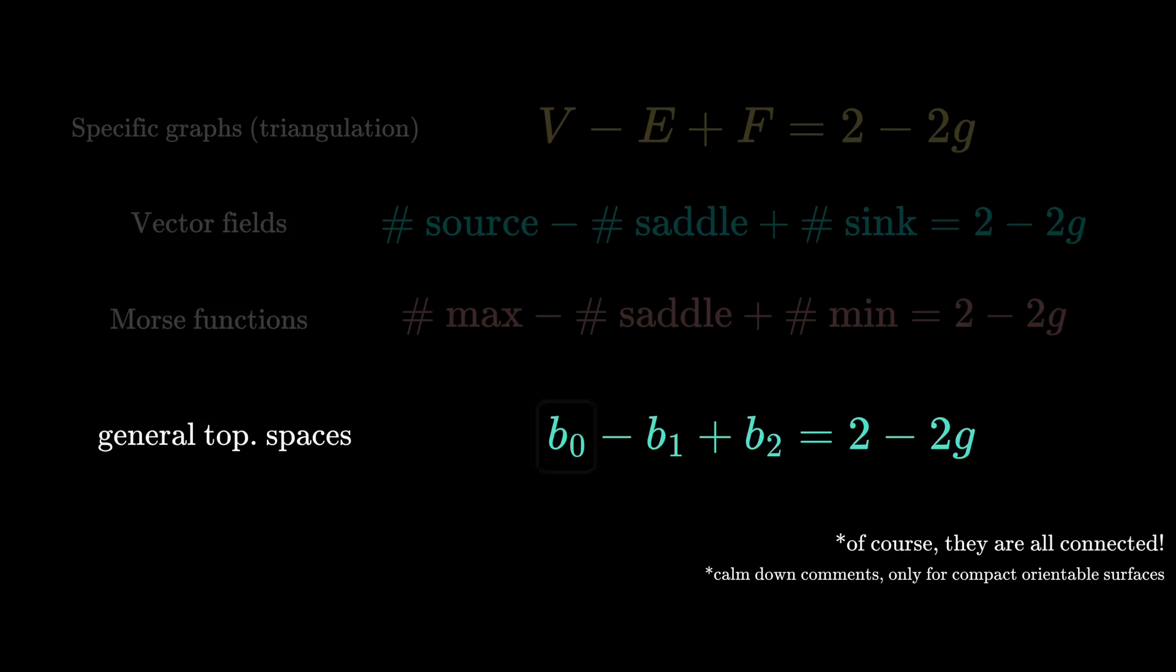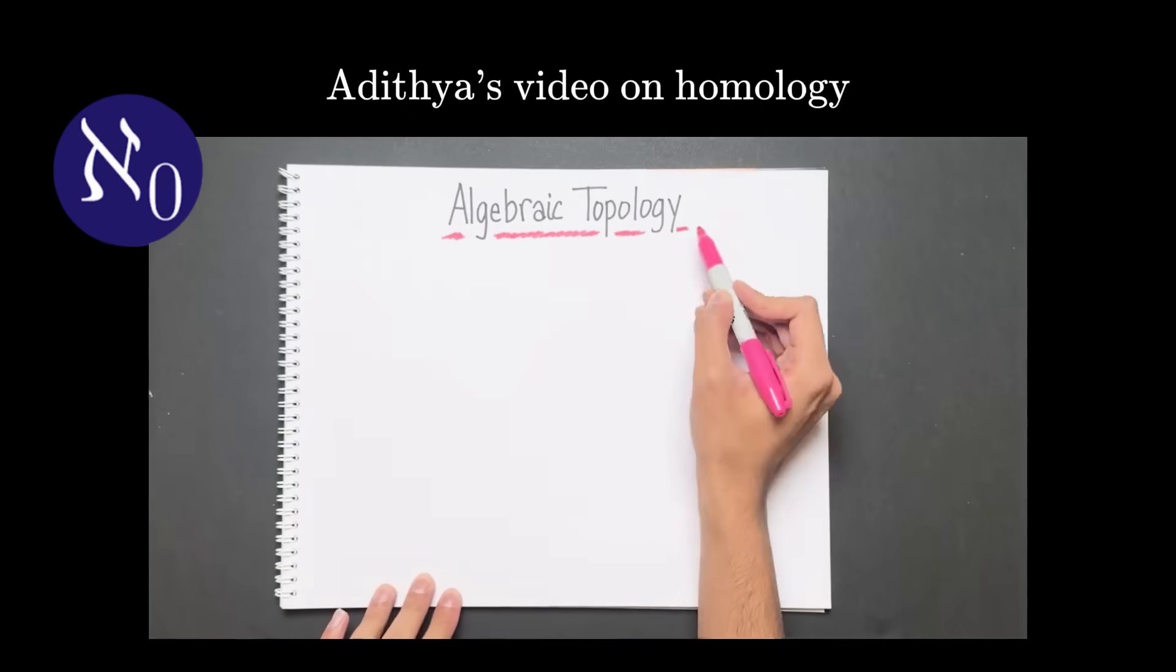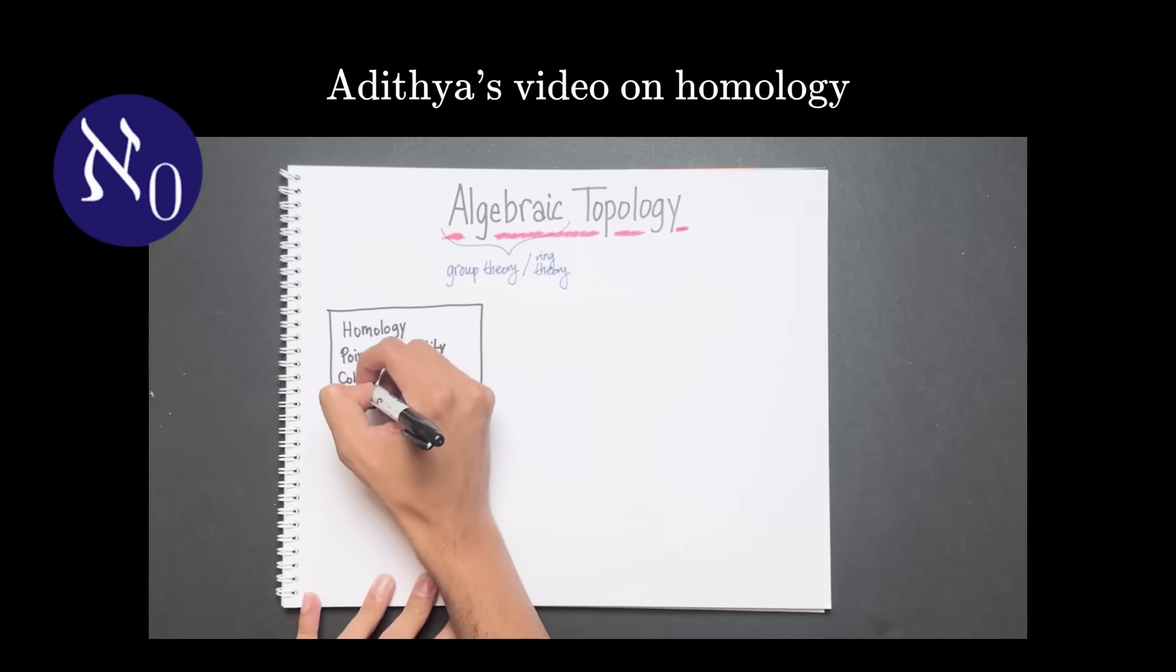These b0, b1, and b2 are called betti numbers, defined using homology, an important concept in algebraic topology. These betti numbers generalize to higher dimensions, so you can use this alternating sum of betti numbers to define Euler characteristic for higher dimensional spaces, not just surfaces. If you want to know more about homology, which betti numbers are defined with, check out Aditya's new video on his channel AlephZero.